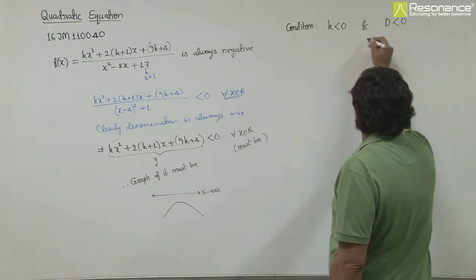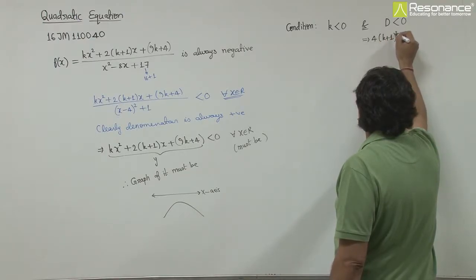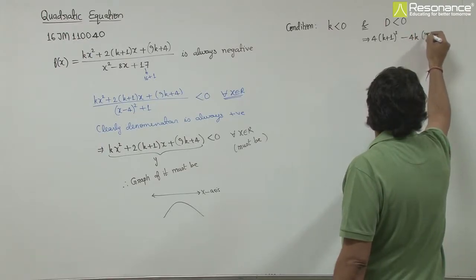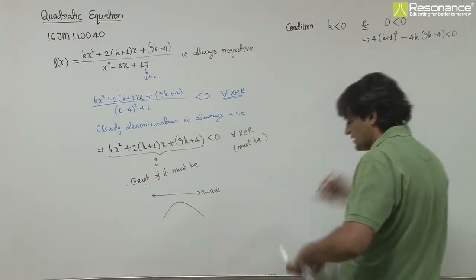Now solving the discriminant, we will have 4(k+1)² - 4k(9k+4) must be less than 0.